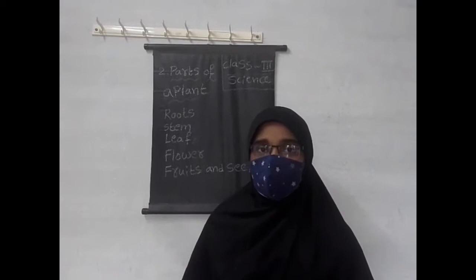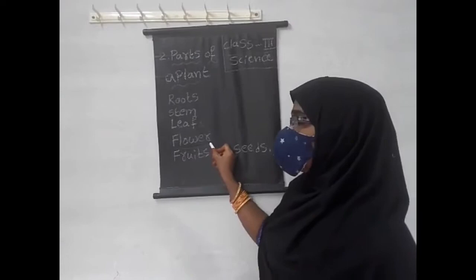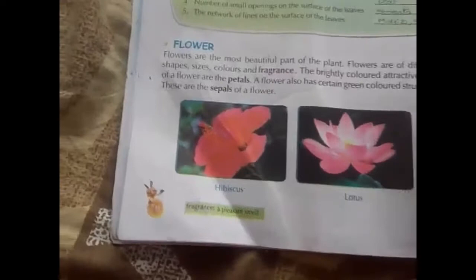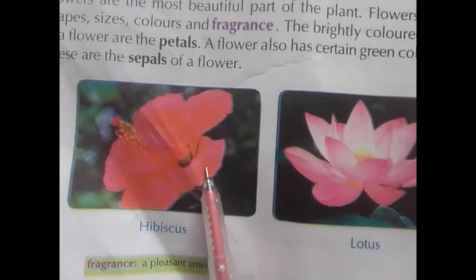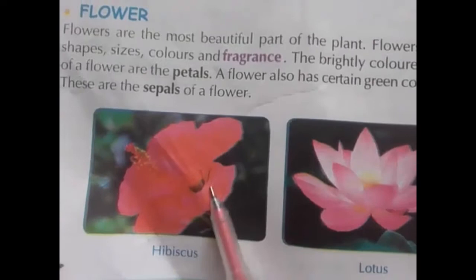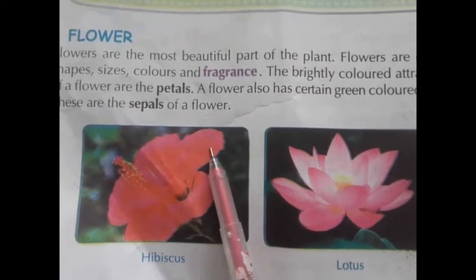Now, another part of the plant — flower — we will discuss deeply. We are going to learn about one of the parts of the plant, that is flower. See the picture here — we have a hibiscus flower, in red color, and it has petals. These are called petals.